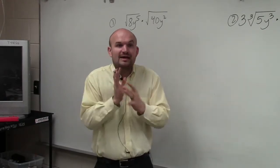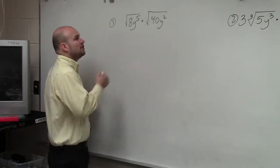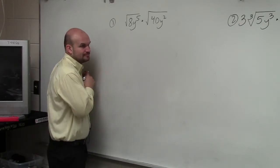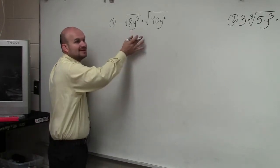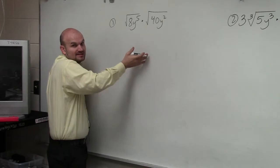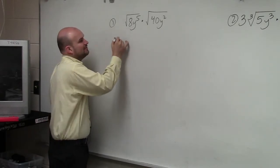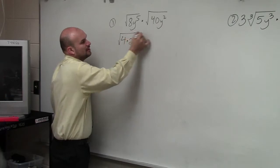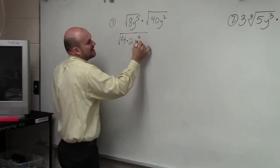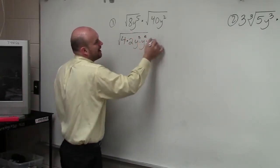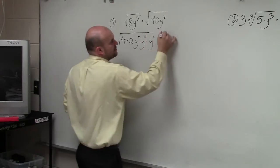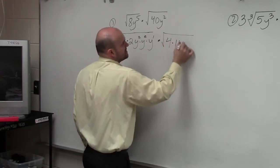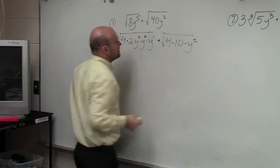Before we even get to multiplying, we have to make sure we simplify. What I'm going to do is rewrite this in terms of numbers I know I can square. So I can rewrite 8 as 4 times 2, y squared times y squared times y to the first power, times the square root of 4 times 10 times y squared.